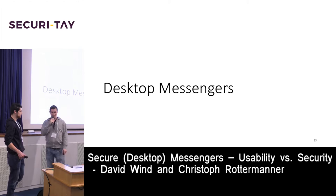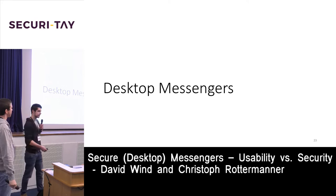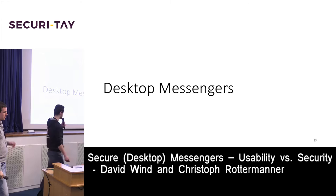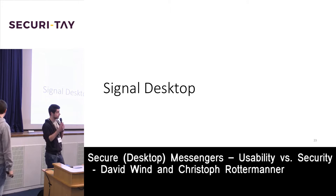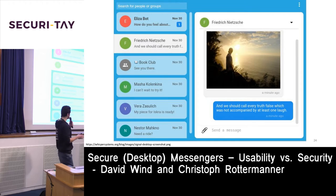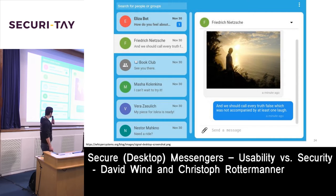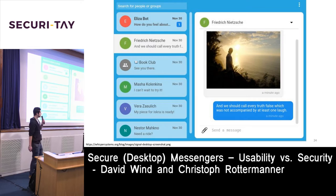The next part is about desktop messengers. Over the last couple of months we looked at Signal Desktop and WhatsApp Web. Signal Desktop is a Chrome extension, released last year in closed beta requiring an invite, and earlier this year the beta became publicly available. You can install it from the Chrome store or build it yourself.